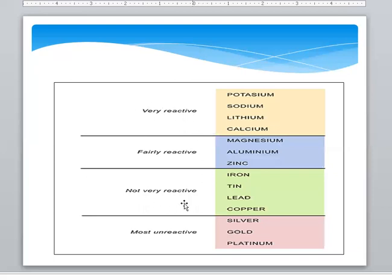We can classify according to their reactivity: very reactive, fairly reactive, not very reactive, and most unreactive or inert or noble metals. Very reactive include potassium, sodium, lithium, calcium - they are from group 1A. Very reactive also includes magnesium, aluminum, zinc from 2A and d-block elements.